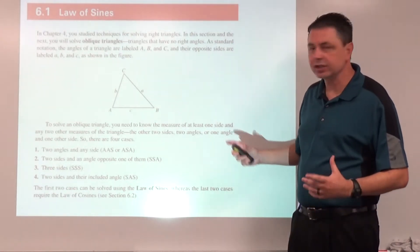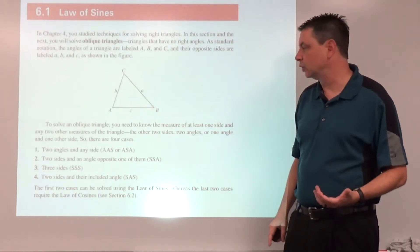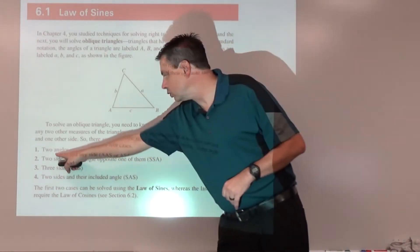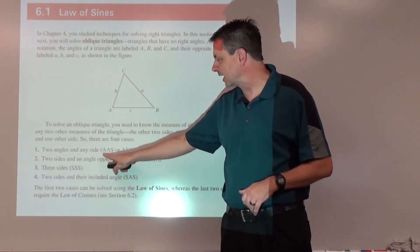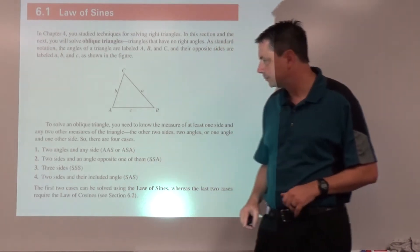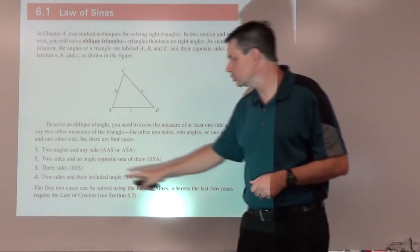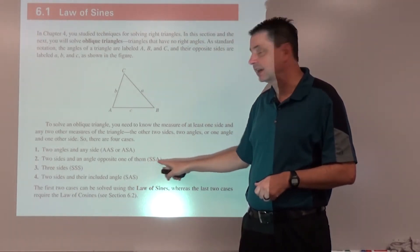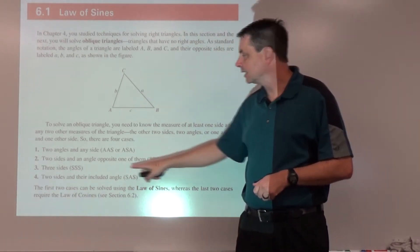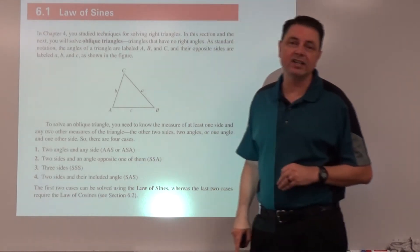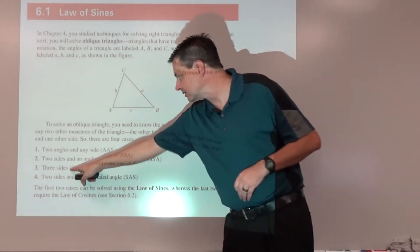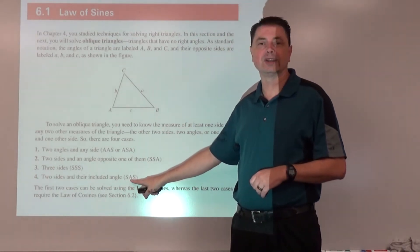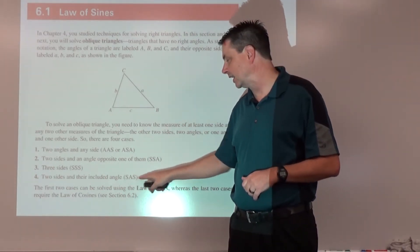The cases we have to deal with are: if the three pieces of information we know are two angles and any side, that could be angle-angle-side or angle-side-angle. Case two: two sides and an angle opposite one of them, so side-side-angle. Case three: we know all three sides but no angles, side-side-side. And then two sides with the angle between them, side-angle-side.